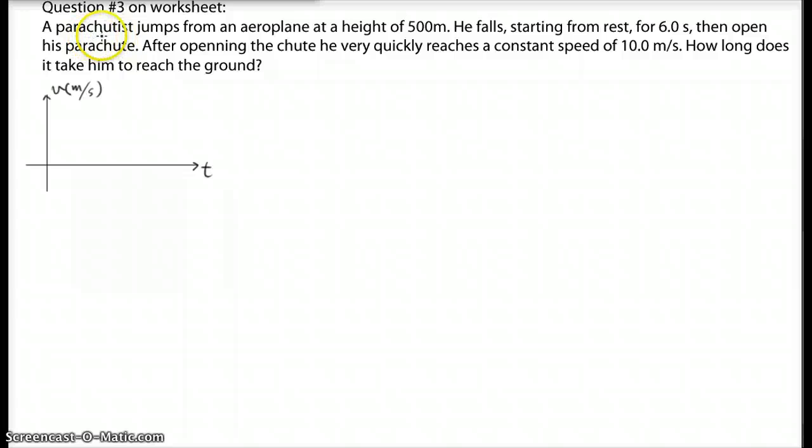A parachutist jumps from an airplane at a height of 500 meters. He falls starting from rest for 6.0 seconds, then opens his parachute. After opening the parachute, he very quickly reaches a constant speed of 10 meters per second. So how long does it take him to reach the ground?